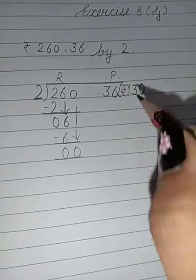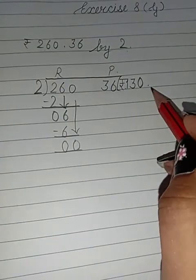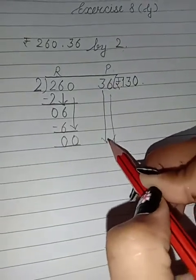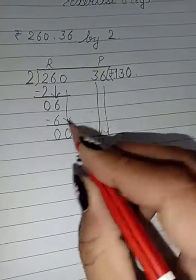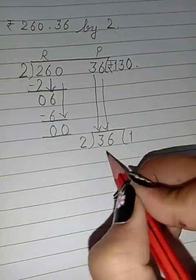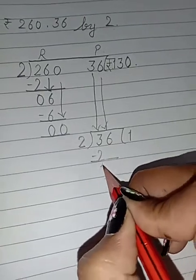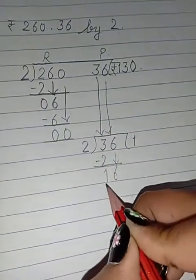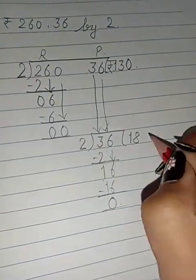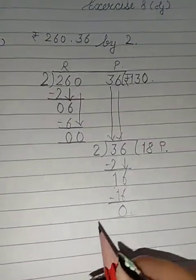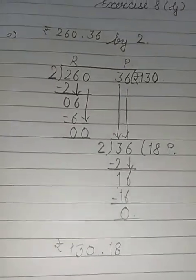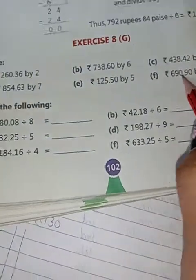This is our rupee column solved, so our answer is 130 rupees. We will put the rupee sign. Next we have to solve the paise. 36 divided by 2: 3 divided by 2. 2 ones are 2. 3 minus 2 equals 1. We will take next digit 6. It will be 16. Then we will cut 2 eights are 16. Now it is solved and the answer is 130 rupees and 18 paise.